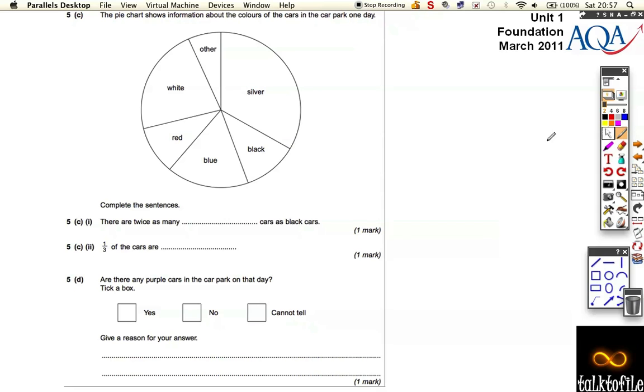We've got part C here. A pie chart shows some information about the colours. It says complete the sentences. There are twice as many something cars as black cars. Well, we're looking for a section which is twice as big as black. Well, it can't possibly be silver. It's too big. It can't be red either. So it's between blue and white. But if you look, if you had two of these, two blacks, it's going to be bigger than blue. It's got to be exactly white.